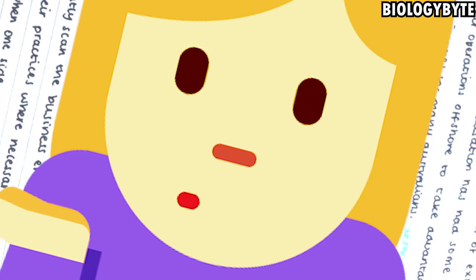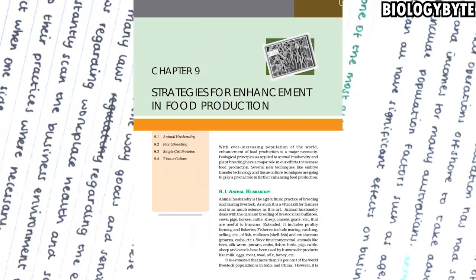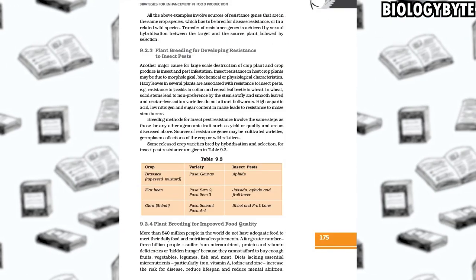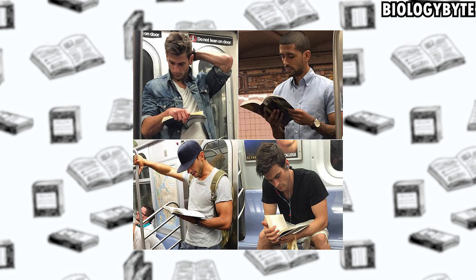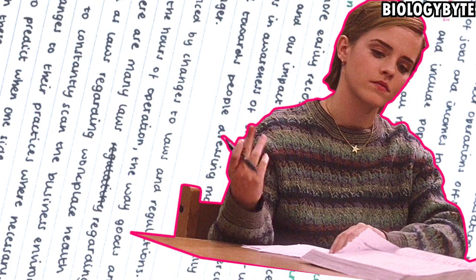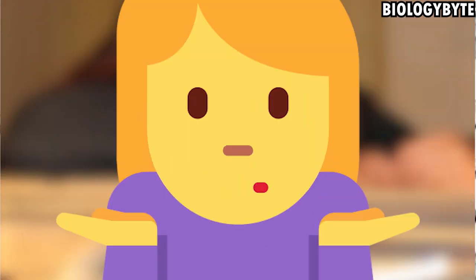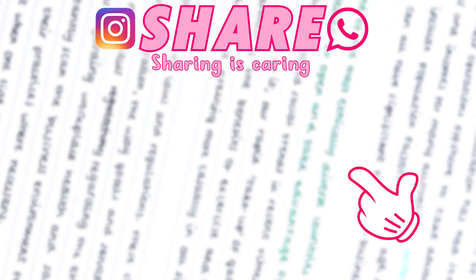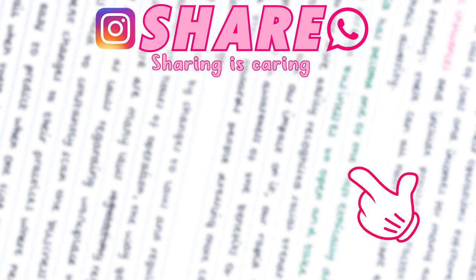The topics and chapters where you should not waste time: the first is Strategies for Enhancement in Food Production. These charts are not as important as people think. Most students waste a lot of time on them but very few questions come from them. If you have not studied them before, don't waste time on the charts now. Focus on what is more likely to appear. Watch the linked video for more guidance.